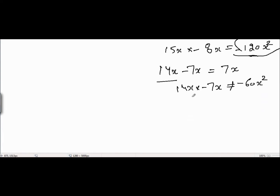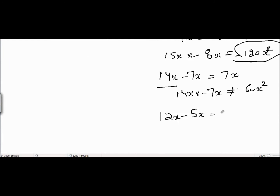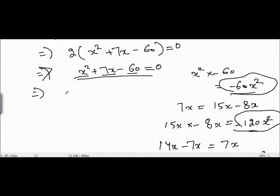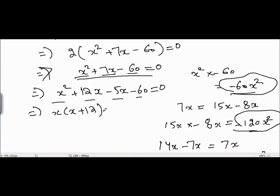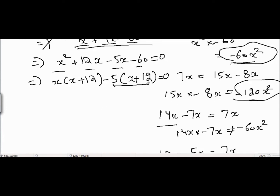When we try 12x minus 5x, this combination works. So we split 7x into 12x minus 5x. The equation becomes x squared plus 12x minus 5x minus 60 equals 0. Taking x common from the first two terms and 5 common from the next two terms, we get x(x plus 12) minus 5(x plus 12) equals 0. Taking (x plus 12) common gives (x plus 12)(x minus 5) equals 0.